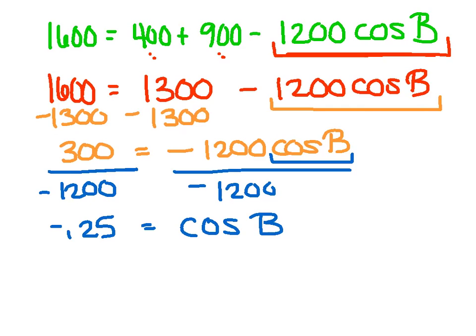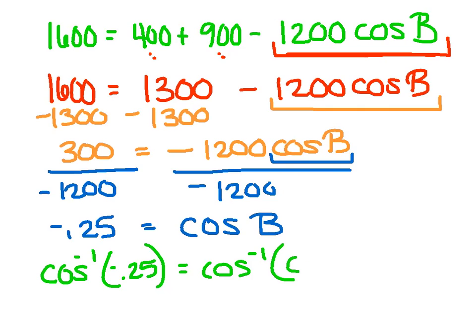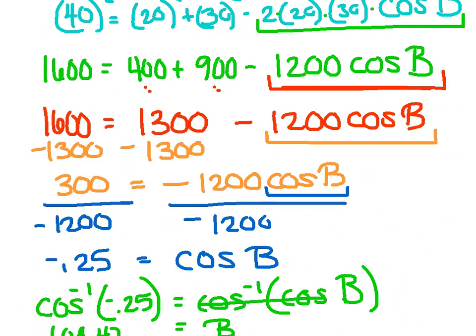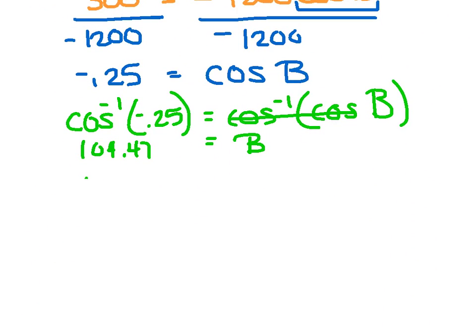I'm not done because I haven't got B by itself — here comes the inverse trig. When you want to solve for an angle, you have to take the inverse of both sides. The whole point of taking the inverse is to kill the cosine — that zaps those two out. Straight to your calculator, I get an answer of 104.47. The question said nearest degree, so that's 104 degrees for angle B.